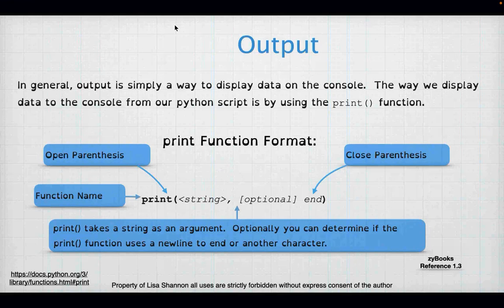Output is the print function. Print must take at least a string — you need at least one argument. The function name is print, all lowercase, with open parentheses. At minimum you need a string. There's a second optional argument, end, which controls whether the line ends with a new line (the default) or a space. If there is a second argument, you split the arguments using a comma.